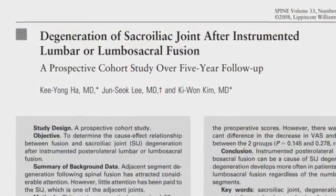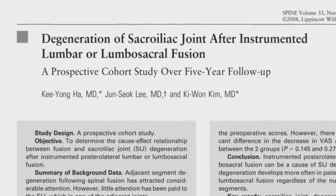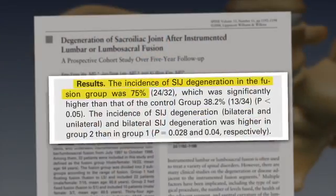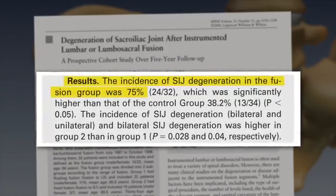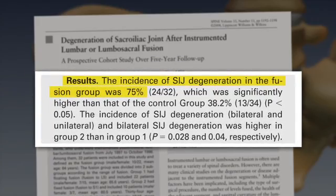Ha published a great paper in Spine a couple of years ago. He performed a prospective study looking at patients who were about to undergo a lumbar fusion and then followed them up with a CT scan five years later. He showed that there was a 75 percent incidence of degeneration at the sacroiliac joint after a lumbar fusion.